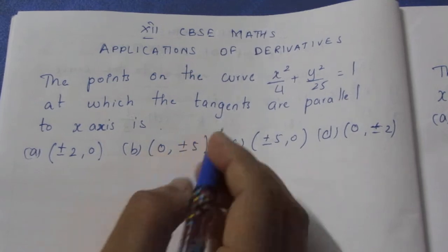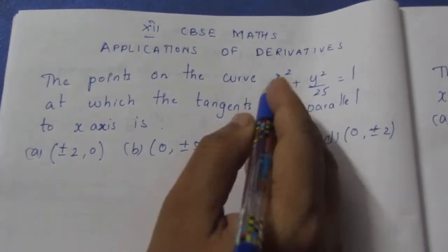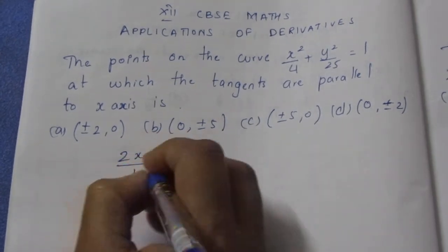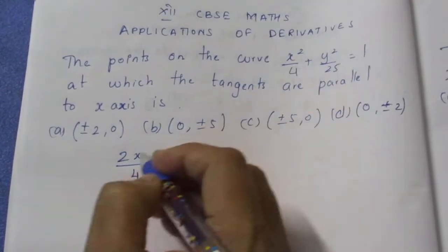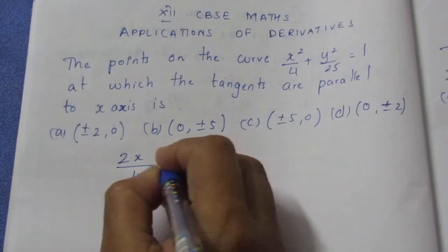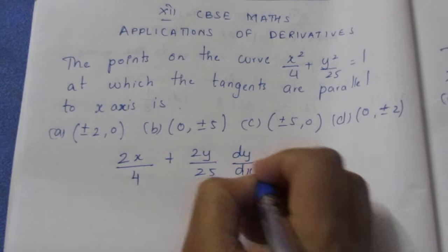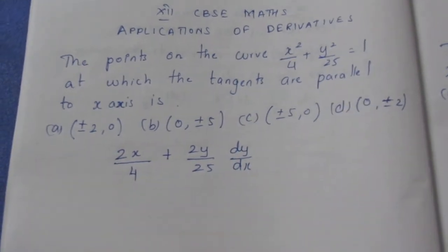Slope, you know that differentiation is the slope. So differentiating this becomes 2x / 4. x² - 2 will come in the front. So 2x / 4 plus 2y / 25. As we are differentiating with respect to x, we need to write dy/dx.